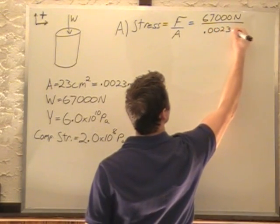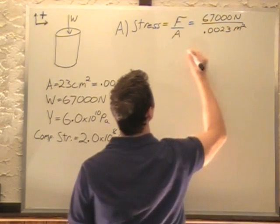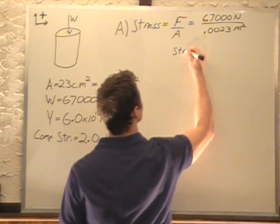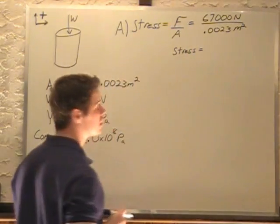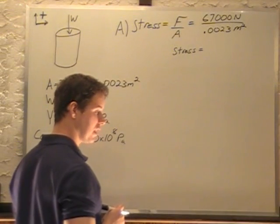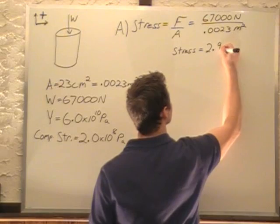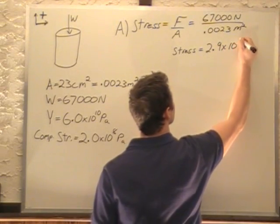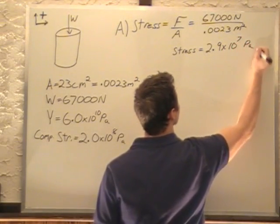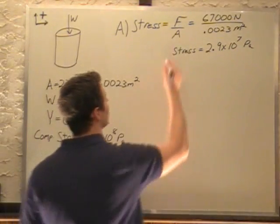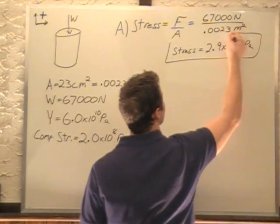0.0023 square meters. 67,000 divided by that gives us 2.9 times 10 to the 7th pascals. Newton per meter squared is a pascal. So that is the answer for A.